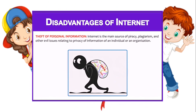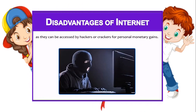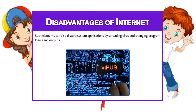Theft of personal information: the internet is a main source of piracy — meaning stealing — and plagiarism — meaning copying — and other issues relating to the privacy of information of an individual or even an organization. Therefore, one should be careful while handling personal information such as name, address, and credit card numbers, as they can be accessed by hackers or crackers for personal monetary gains. Such elements can also disturb system applications by spreading viruses and changing program logics and outputs.